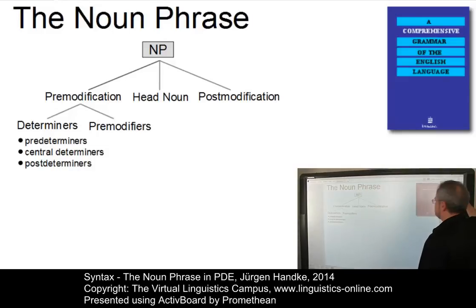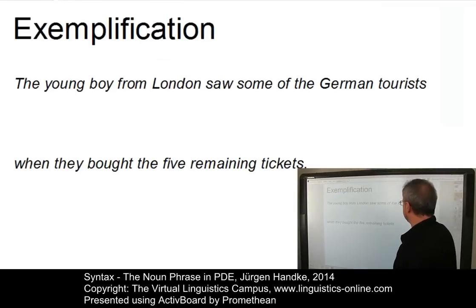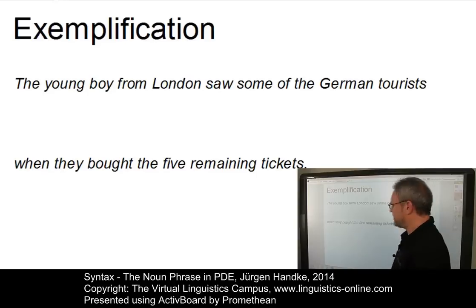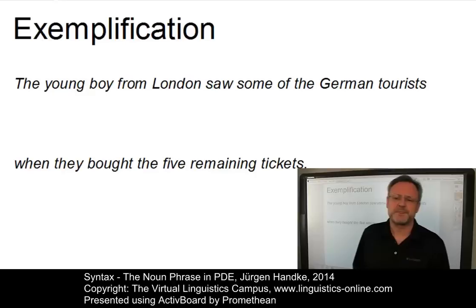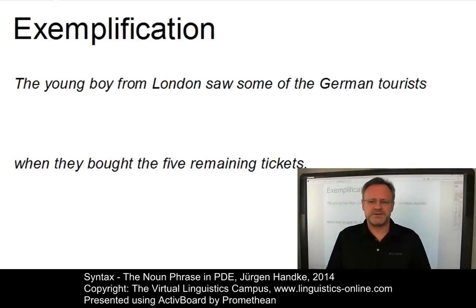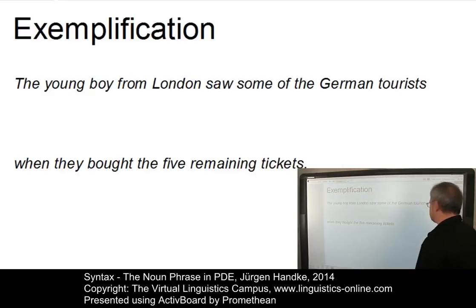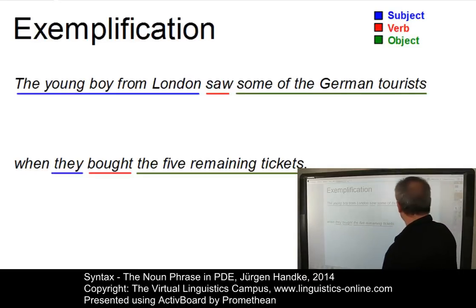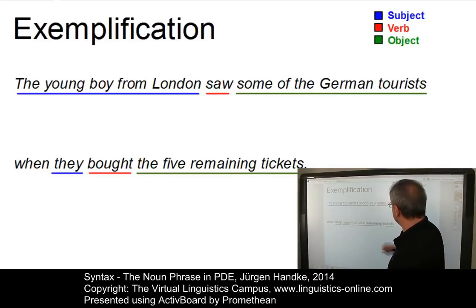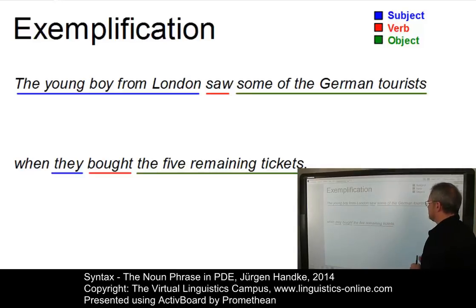Here is an example: 'The young boy from London saw some of the German tourists when they bought the five remaining tickets.' This is, of course, a complex sentence with two clauses. In each clause we have a subject-verb-object structure where the subject has been underlined in blue, the verbs are marked red, and the objects have been underlined by means of a green line.